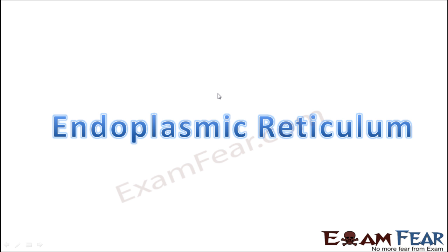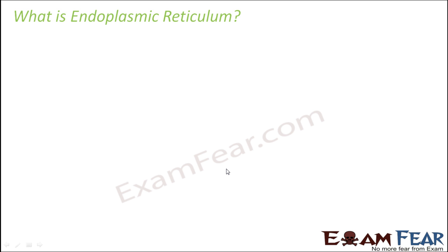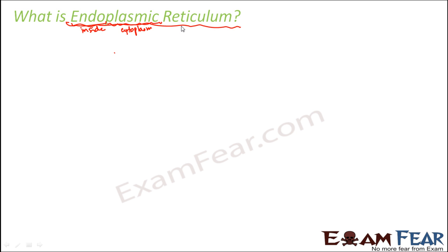We will start our discussion with endoplasmic reticulum. What is endoplasmic reticulum? Endo means inside. Plasmic is something related to plasma, which is nothing but your cytoplasm. And reticulum means network. So it is basically a network which is present inside the cytoplasm. That is endoplasmic reticulum.